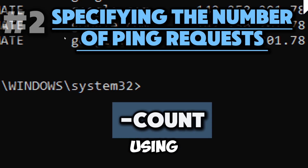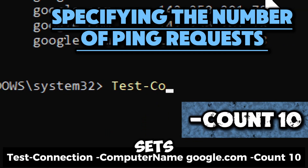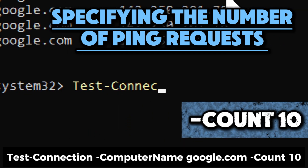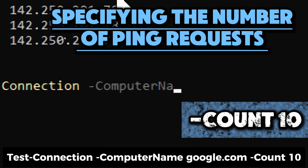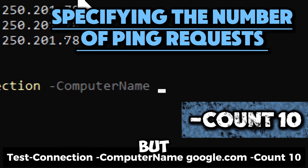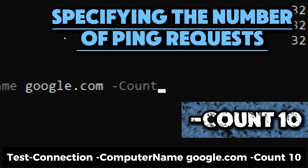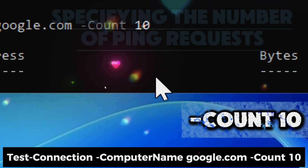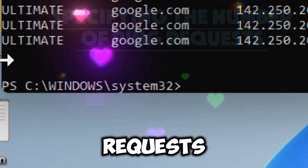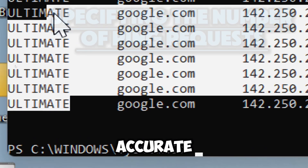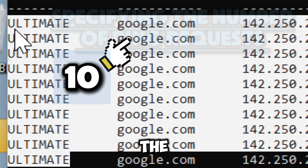You can specify the number of ping requests using the Count parameter. The Count 10 parameter sets the number of ping requests to be sent. By default, Test-Connection sends four requests, but here it is overridden to send 10 pings to google.com. With more requests, you can calculate a more accurate average response time, which provides a clearer picture of the network's speed and performance.